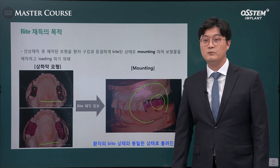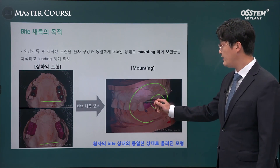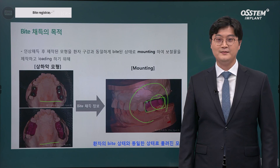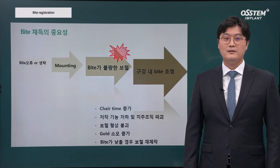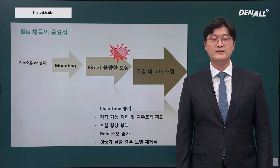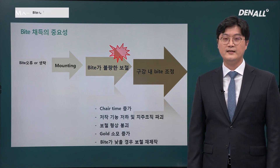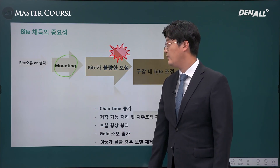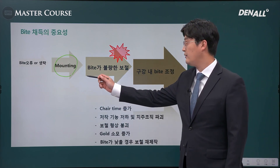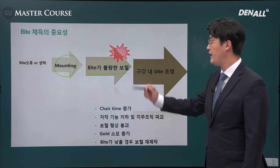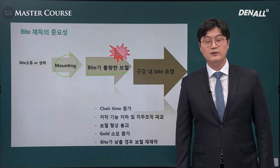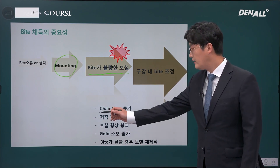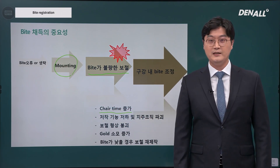If there is no occlusion on the back side, the plaster model cannot be mounted correctly. Through bite registration, it can be mounted stably on the plaster model. If bite registration is done wrongly, or if the bite is not registered and just the impression material is sent to the lab, then the plaster model has to be mounted artificially on the articulator, and the resulting prosthesis will be defective. If you deliver it to the patient's mouth, you will need a lot of oral adjustment, increasing chair time.